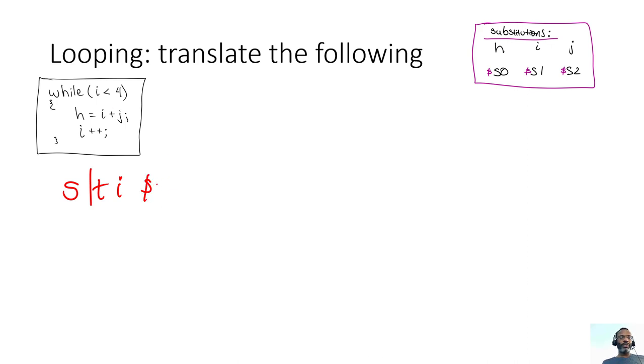The value that we're going to set once again will be t0. The value that we're looking to compare: we want to do something like, is i less than four? And so i is in s1, the immediate value is four.